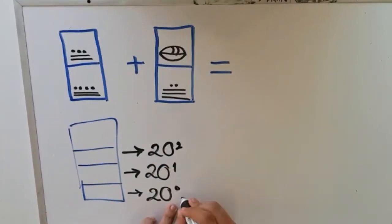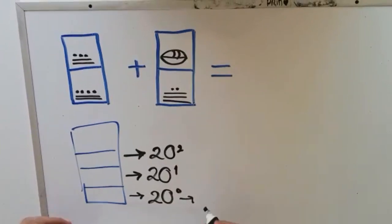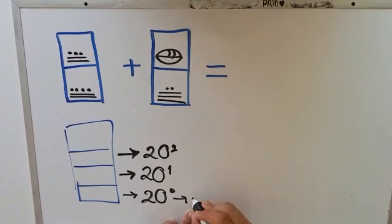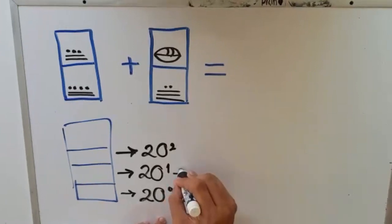So 20 to the power of 1 means that all the symbols, the quantities in numbers, are multiplied by 1. The second level is multiplied by 20.